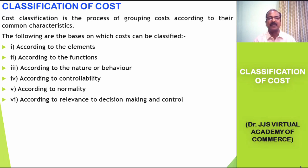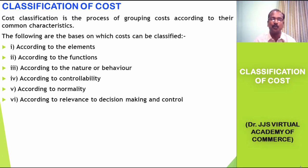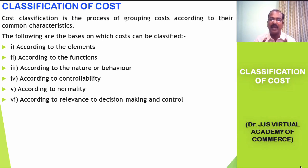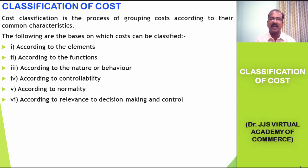Classification of cost is nothing but the process of grouping costs according to their common characteristics. We identify a set of common characteristics among the costs incurred, and based on those common characteristics, we group them and call each group as a type of cost.